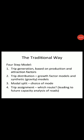Now we should discuss the traditional transportation planning process. The traditional process is divided into the four-step model. The first one is trip generation, which is based on the production and the attraction factor.